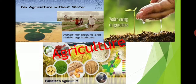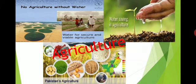Pakistan is an agricultural country and agriculture is the backbone of Pakistan's economy, with 60% of Pakistan's population directly involved in agriculture. Up to 95% of Pakistan's water is used in agriculture, so a shortage of water would cause a shortage of food crops and spell economic disaster and famine.